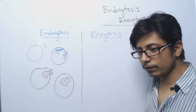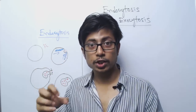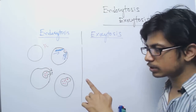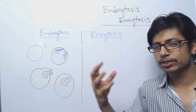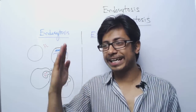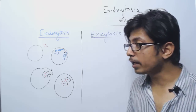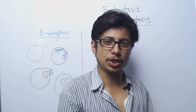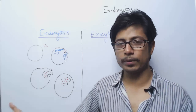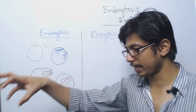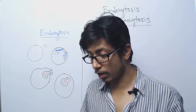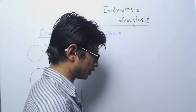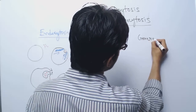In phagocytosis, the cell engulfs large solid particles. Phagocytosis works in a slightly different fashion from pinocytosis. In phagocytosis, cells either take solid food particles or kill bacteria and other foreign materials. Immune system cells like macrophages are specifically designed to phagocytose - to engulf large cells, cell debris, dead cells, bacteria, and other harmful foreign particles in our body. There are two types of phagocytosis.